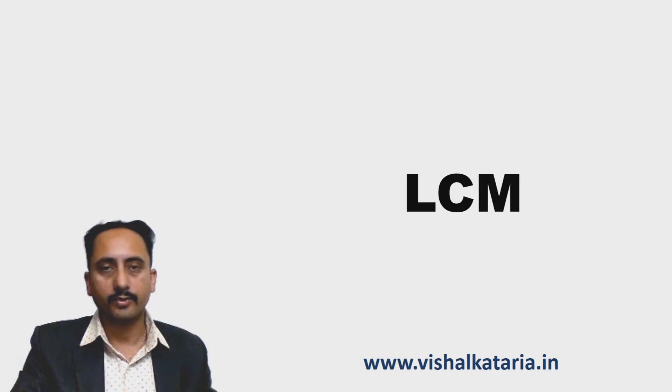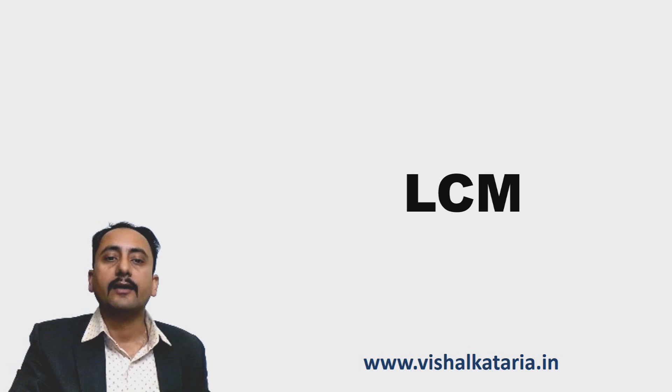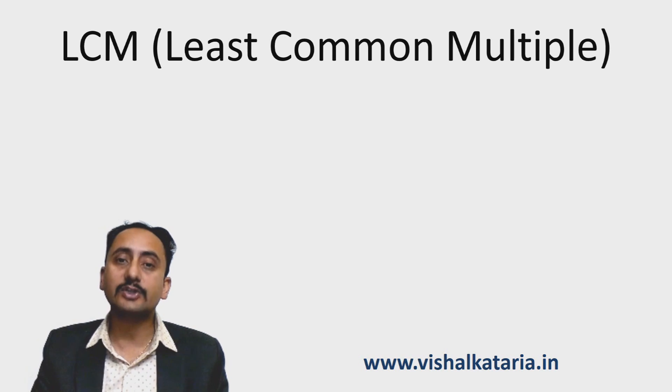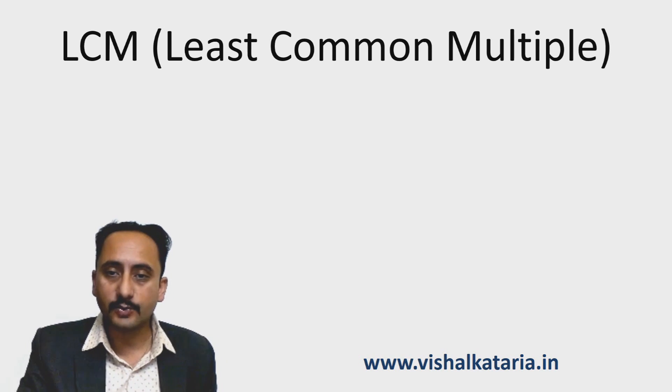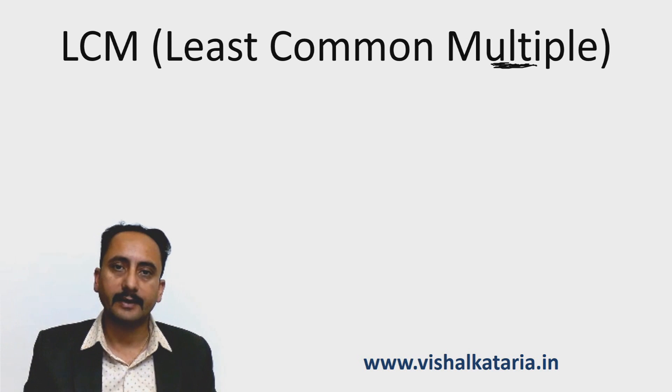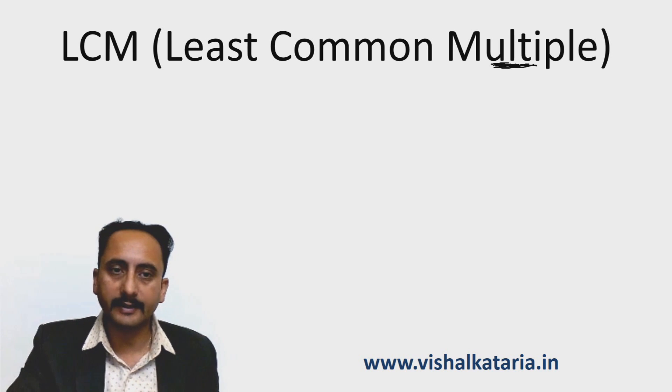Hi students, this is the last video of the series. I started with prime factorization, then in the next video we discussed how to find HCF, and this is the third one: how to find LCM of two or more numbers. First of all, let's understand the meaning of LCM. LCM stands for Least Common Multiple, which means we have to do something with the multiples of a number, because M stands for multiple. I'll explain it with the help of an example.